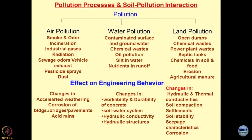These are the different processes — pollution processes and soil pollution interaction. Pollution occurs in 3 ways, or these are the 3 pathways: air pollution, water pollution, and land pollution.